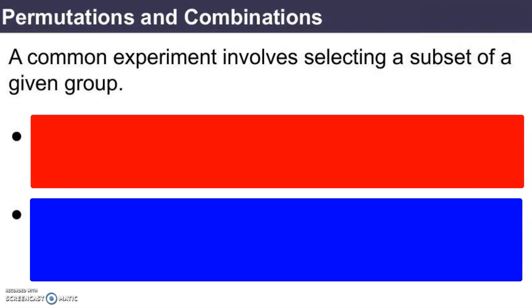So in the last video we talked about experiments and that experiments were situations where one of a certain possible number of outcomes was going to happen at random, at chance. And that set of outcomes was called the sample space.